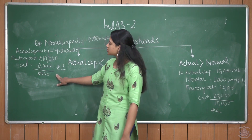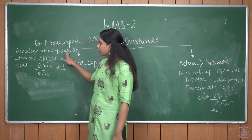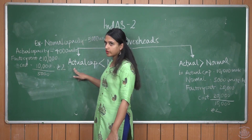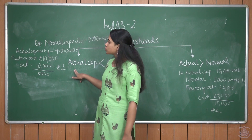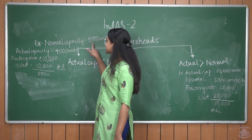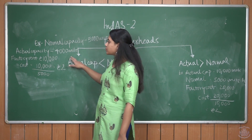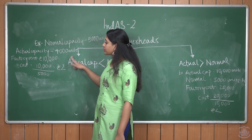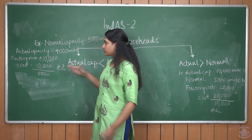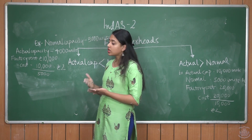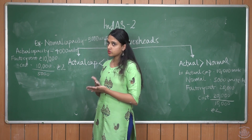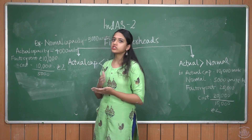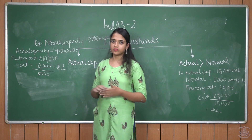If we consider actual capacity, then Rs. 10,000 divided by 4,000 gives Rs. 2.5. Since actual capacity is less than normal capacity, it means production was inefficient. We cannot consider that because we cannot treat our inefficiency as a cost. Hence, the excess cost of Rs. 2.5 per unit should be excluded from inventory.